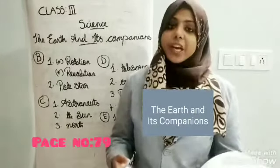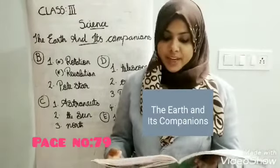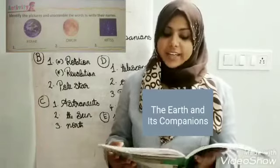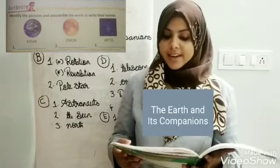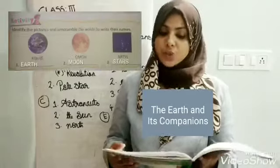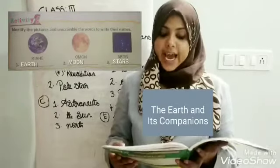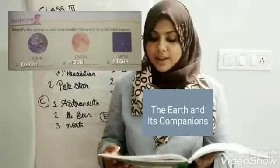All of you take page number 17. Can you see that activity? Identify the pictures and unscramble the words to write the names. The first one: Earth — E-A-R-T-H. Earth.